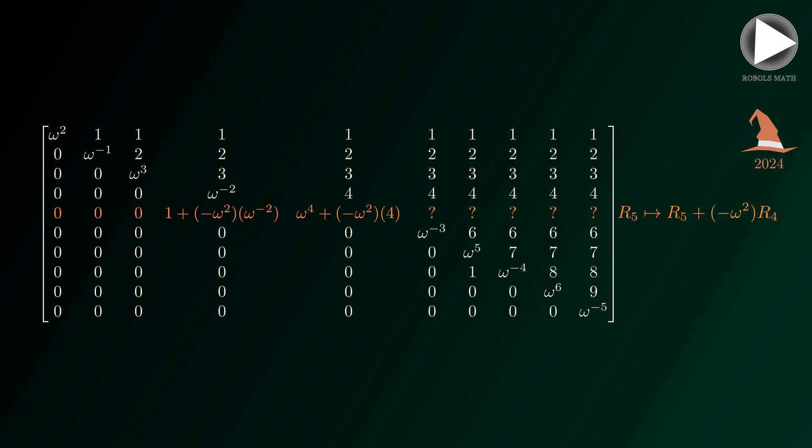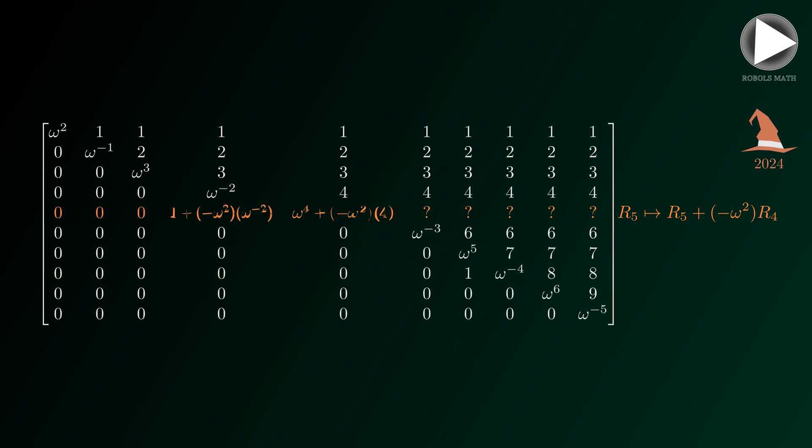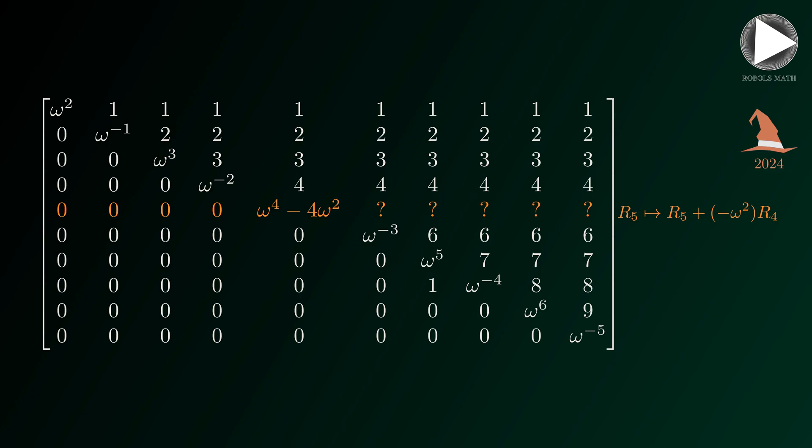I suggest that we don't bother simplifying the entries to the right of the diagonal. So let's give them as question marks here.